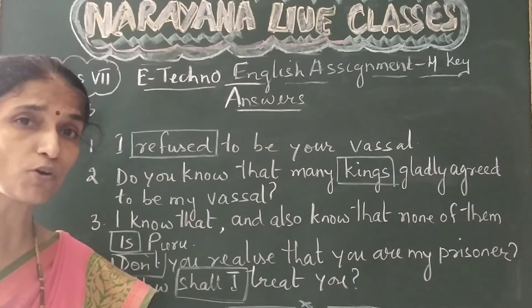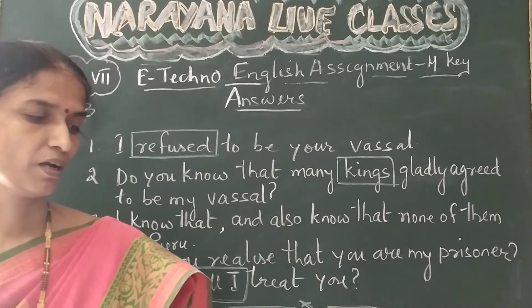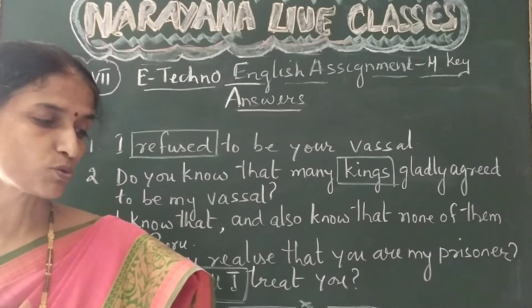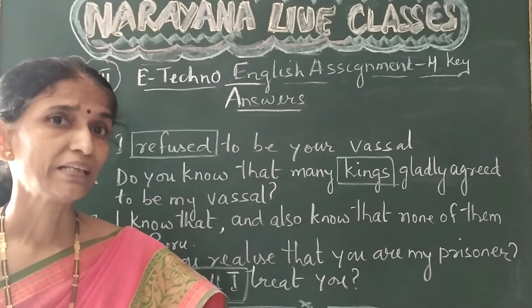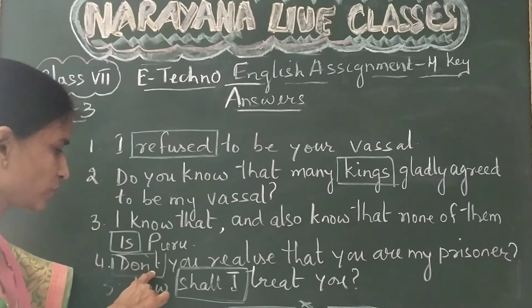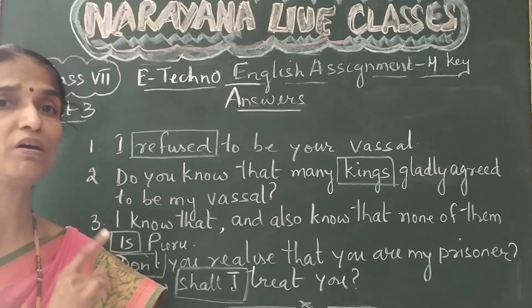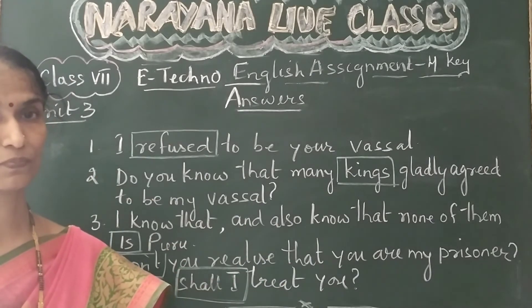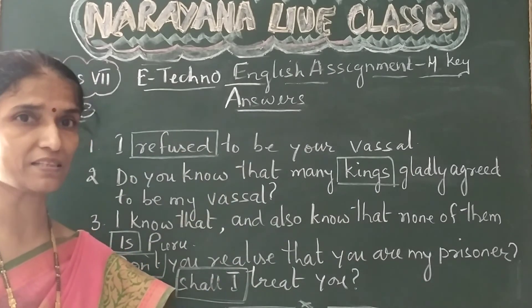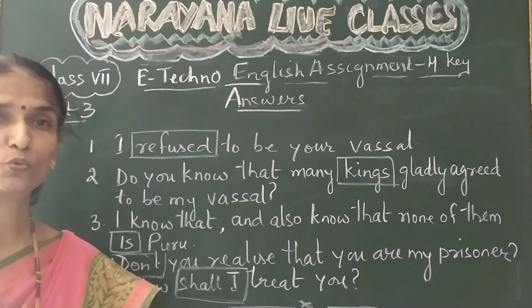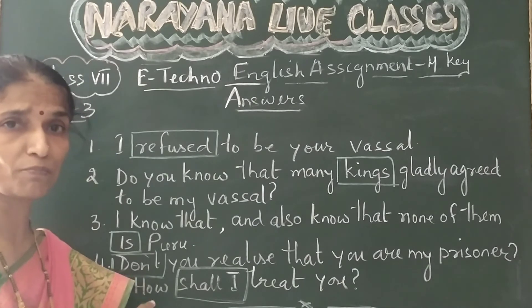So the correction is at the verb — the be-form which we change to 'is.' Then the fourth sentence: 'Doesn't you realize that you are my prisoner?' The mistake is with the questioning verb 'doesn't.' We should not use the 'does' form with the second person. I do, you do — he does, she does, it does. So we should not use 'does' with 'you'; 'you' is second person singular here, so we should use the 'do' form.